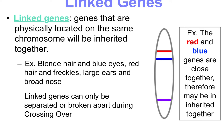Linked genes are only separated or broken apart during crossing over — that's the only time they can be unlinked. But for the most part, because they're located so close together on the same chromosome, they are often inherited together. That's why if one parent has red hair and freckles and another has blonde hair and blue eyes, most children born with red hair will also show freckles.